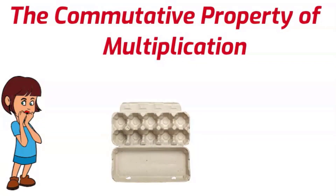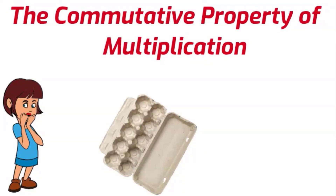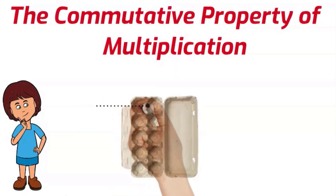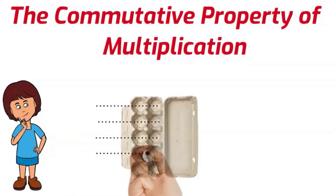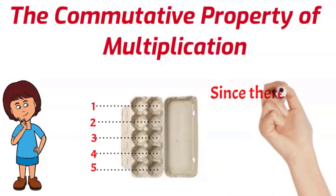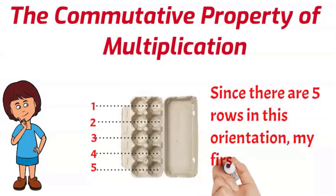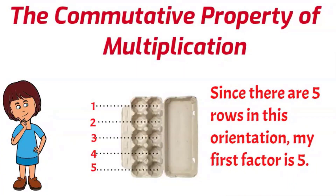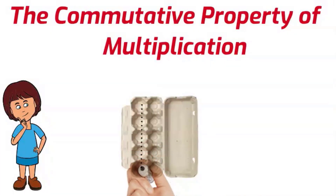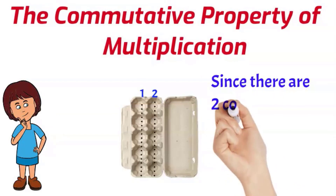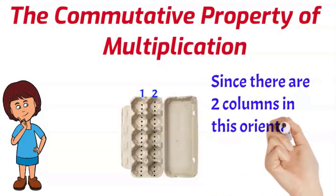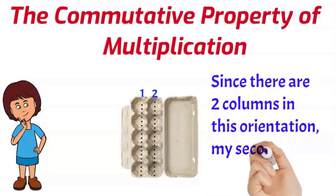Putting it all together, the multiplication equation is two times five equals ten. Now let's consider rotating the egg carton into a new orientation. This time we have one, two, three, four, five rows — so the first factor will be five. Then we check the columns: there are two columns, so the second factor will be two.